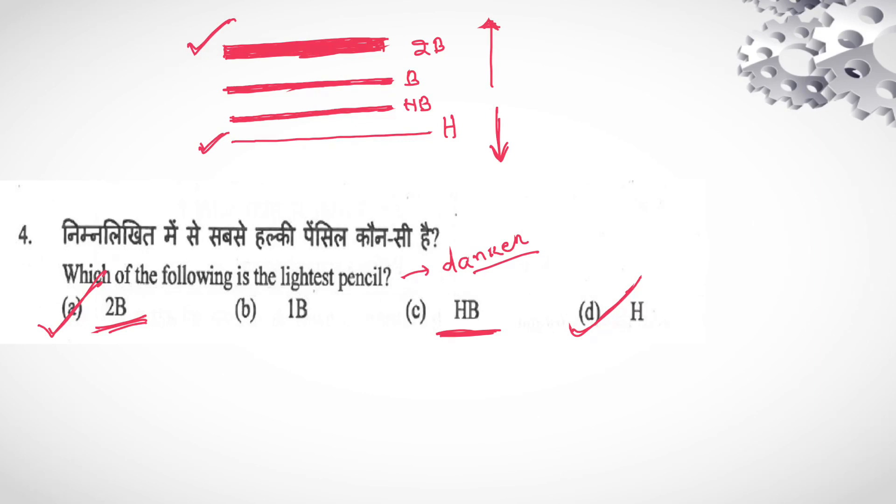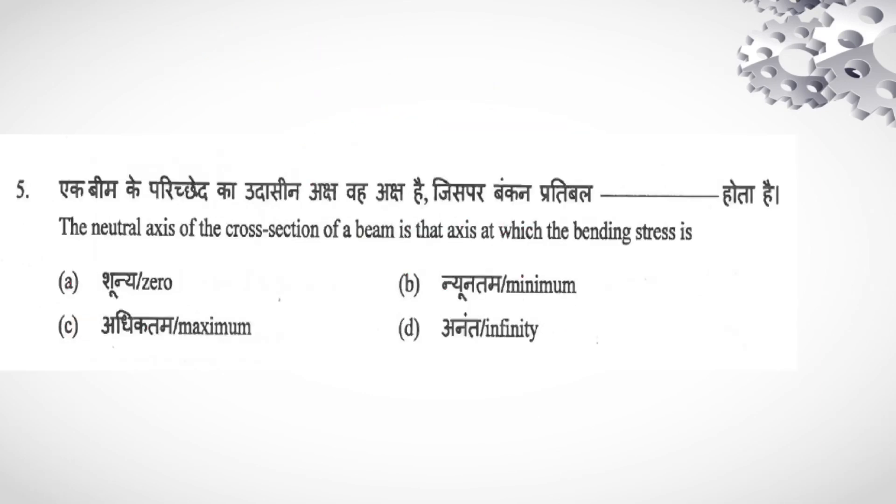Question is, the neutral axis of the cross section of a beam is that axis at which the bending stress is... We know bending stress formula: σ/y = M/I, so σ_b your bending stress equals M·y/I. Y is the distance from your